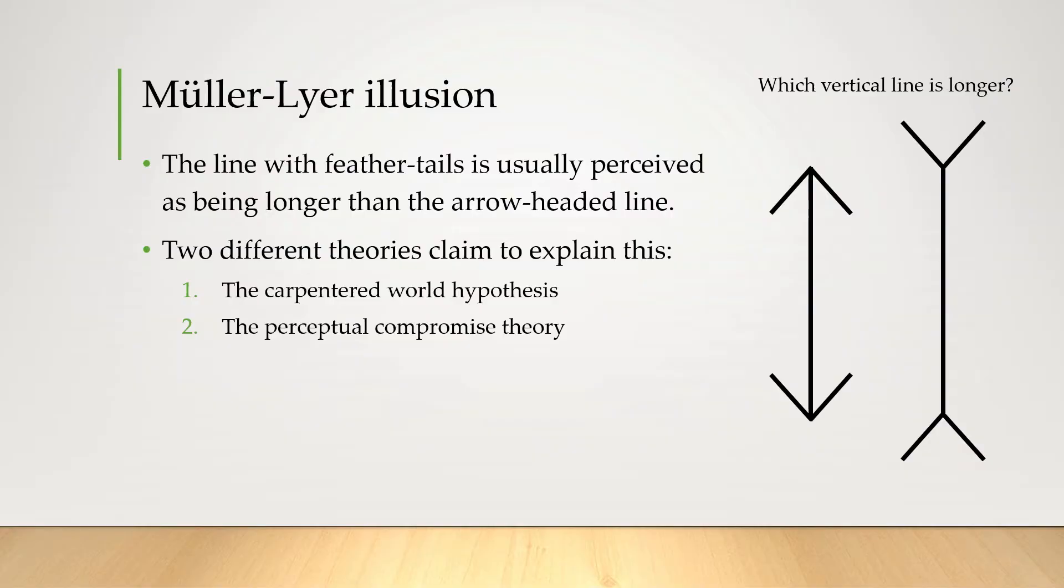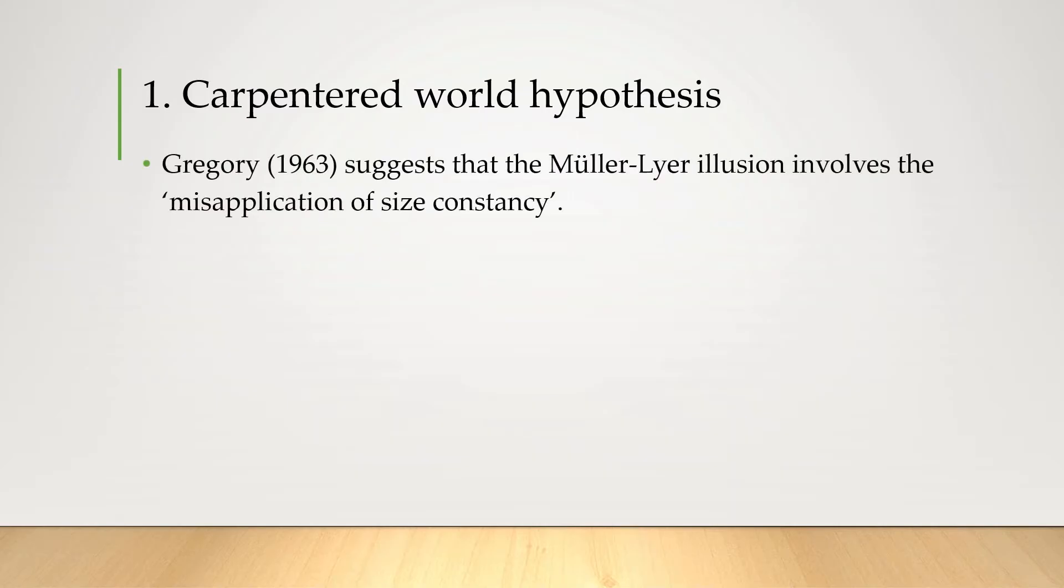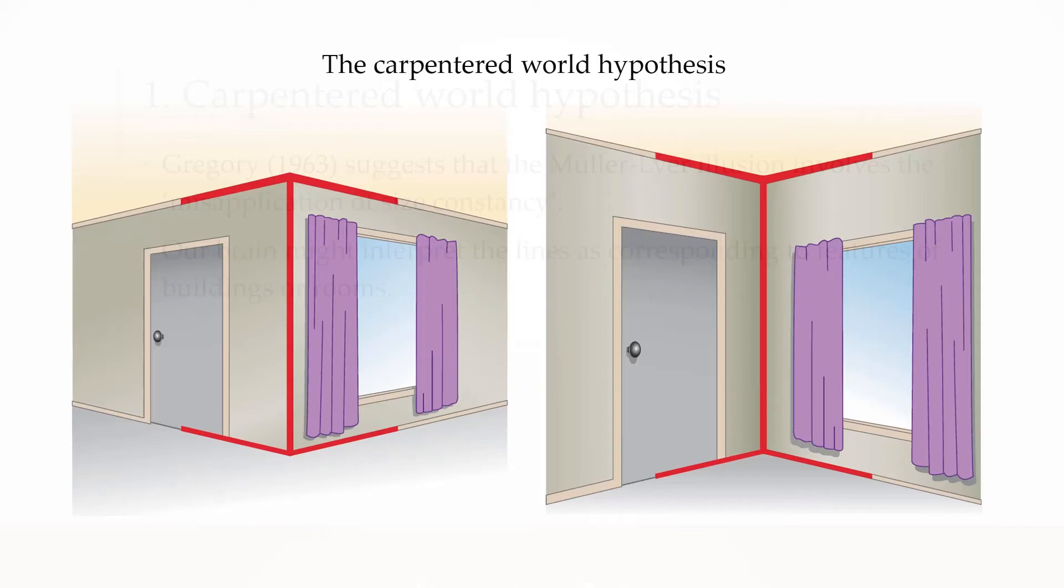Two theories have been put forward to try and explain this: the carpentered world hypothesis and the perceptual compromise theory. Gregory suggests that the Müller-Lyer illusion involves a misapplication of one of our perceptual constancies, saying that our brain might interpret the lines as corresponding to features of buildings or rooms. So perhaps something like this. So because we're familiar with what a carpentered world looks like, we see those images and our brain corresponds them to corners and edges of rooms, and we think oh yeah this corner is sort of farther away from us and this one isn't, so the height of the room is probably taller in this one.